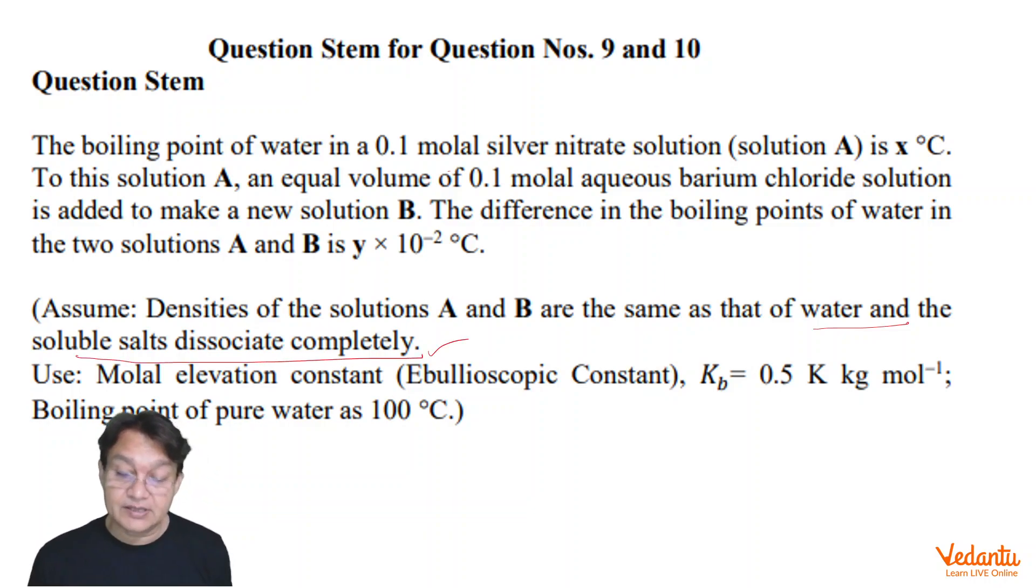That is a very important line. That means, AgNO3 is completely dissociated as well as barium chloride is also completely dissociated. And KB is given to be 0.5. So, let us first calculate the x degree centigrade.